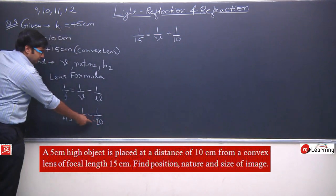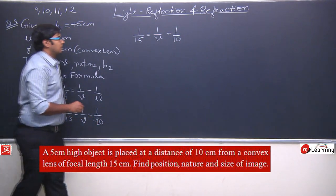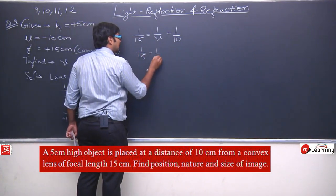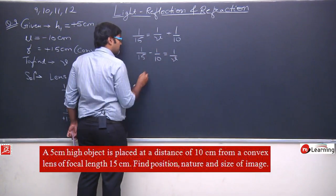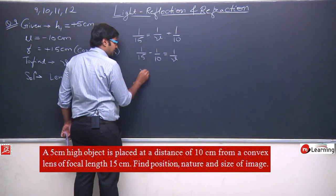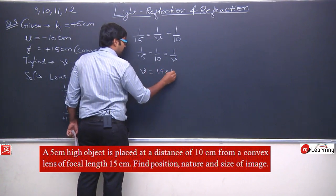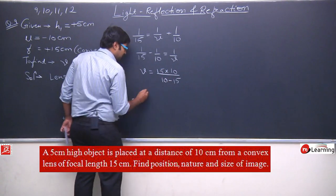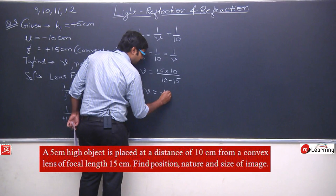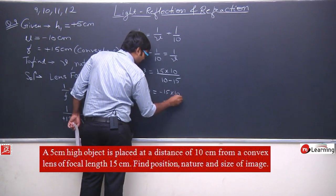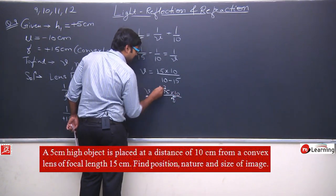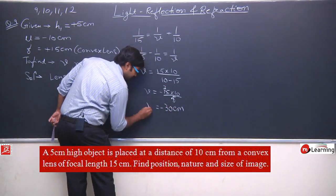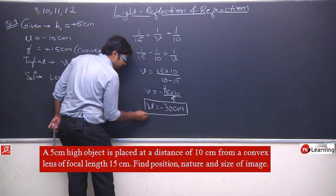Isko solve karenge. So we will get 1 upon 15 is equals to 1 upon v plus 1 upon 10, because ye dono milke plus ho jayenge. Then 1 upon 15 minus 1 upon 10 is equals to 1 upon v. Solving this, v is equals to 15 into 10 upon 5, and you will get minus 30 centimeters. This is the position of the image.